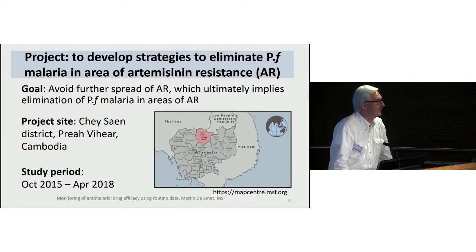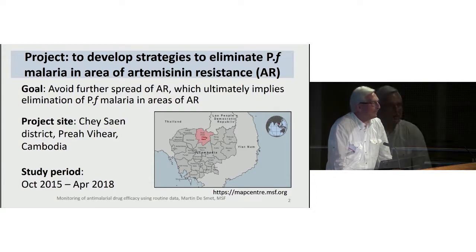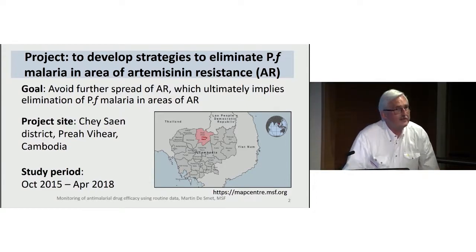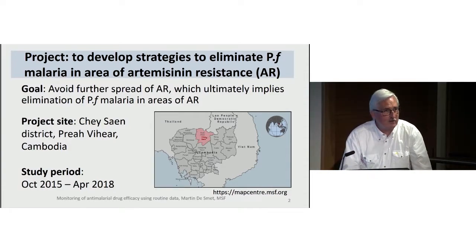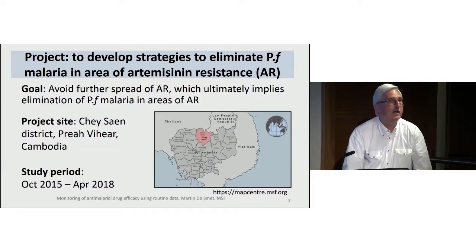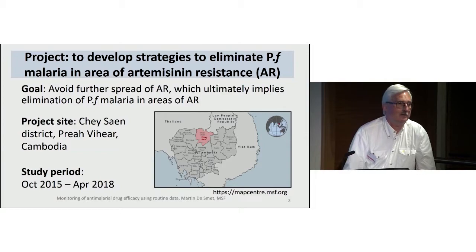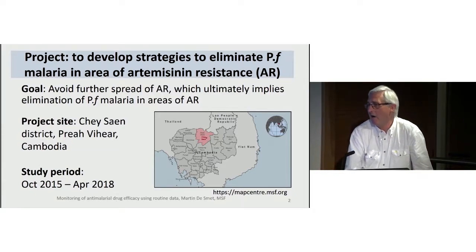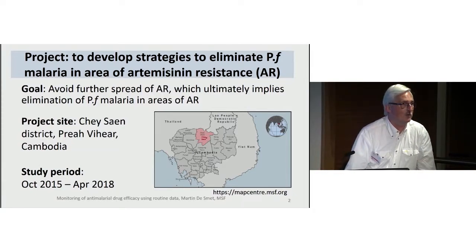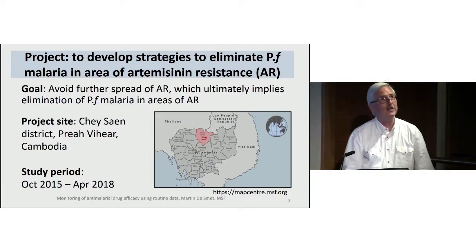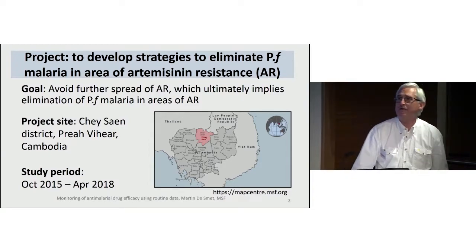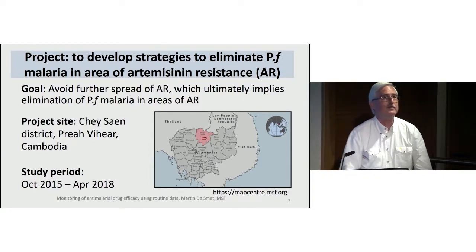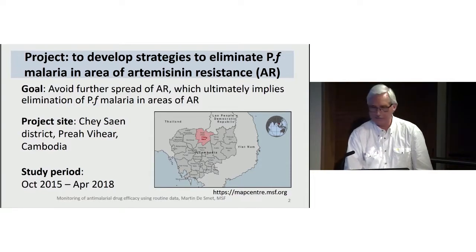Artemisinin is the most potent drug we have against malaria — definitely an indispensable drug. We are working on malaria in Cambodia specifically to tackle that resistance. The last surviving parasites and strains will be the most resistant ones, which means that if we want to tackle resistance, we will ultimately have to work towards elimination in that area, to avoid the spread of resistance to other areas.